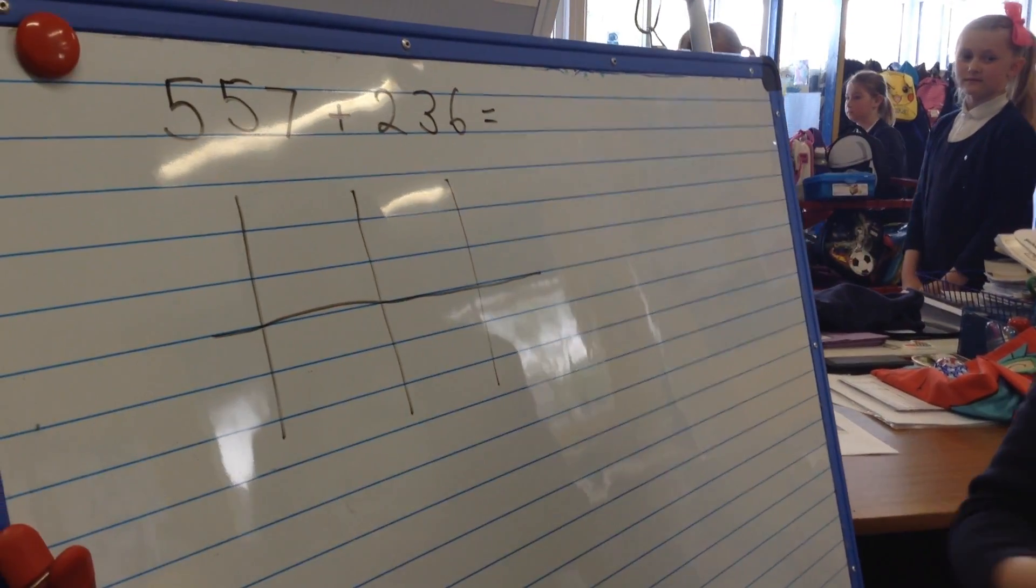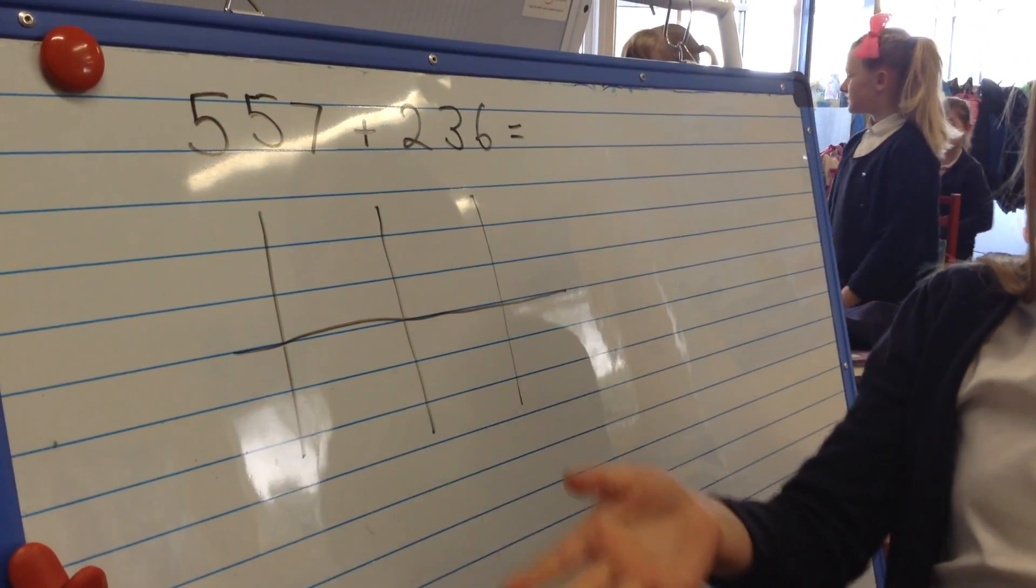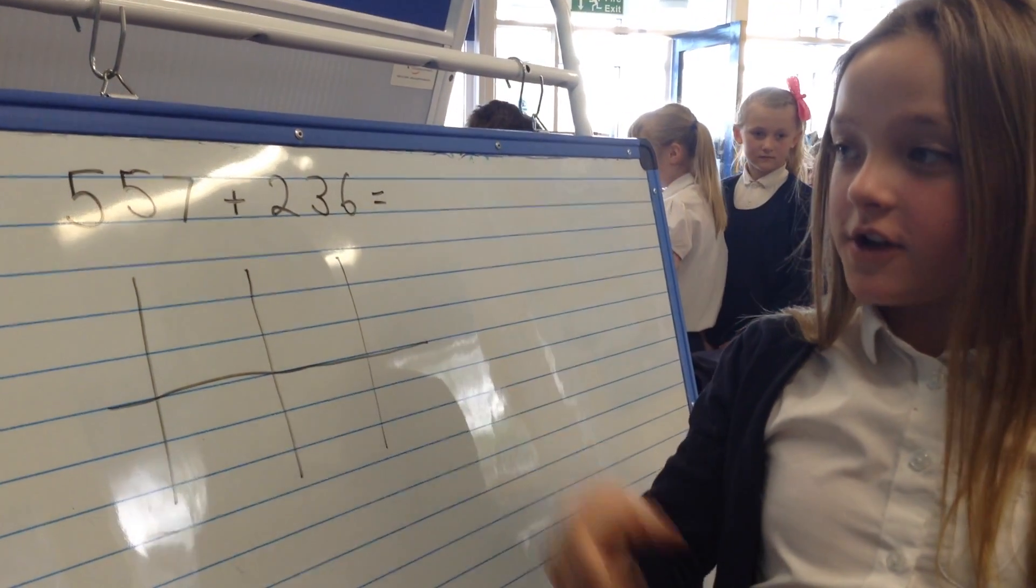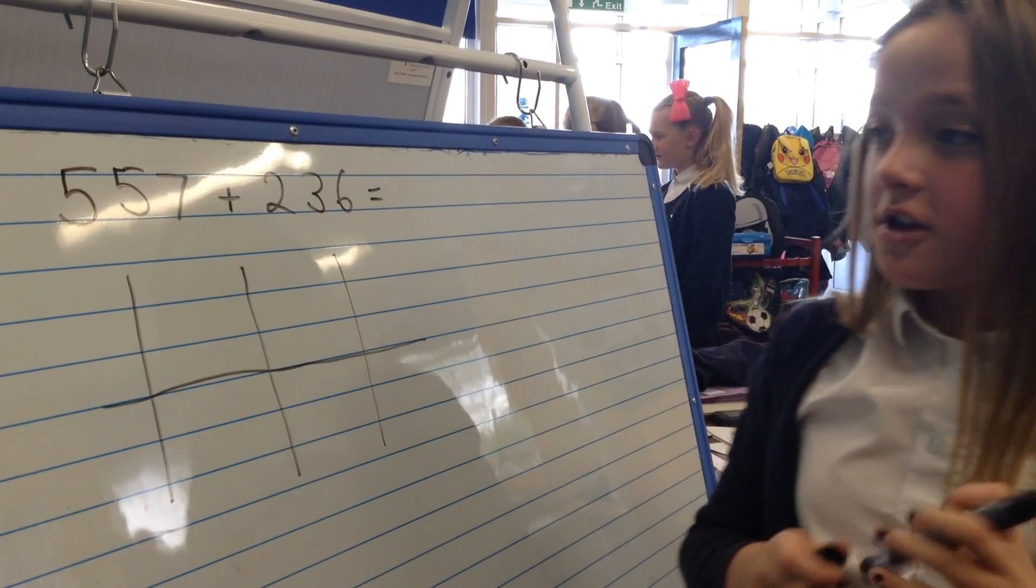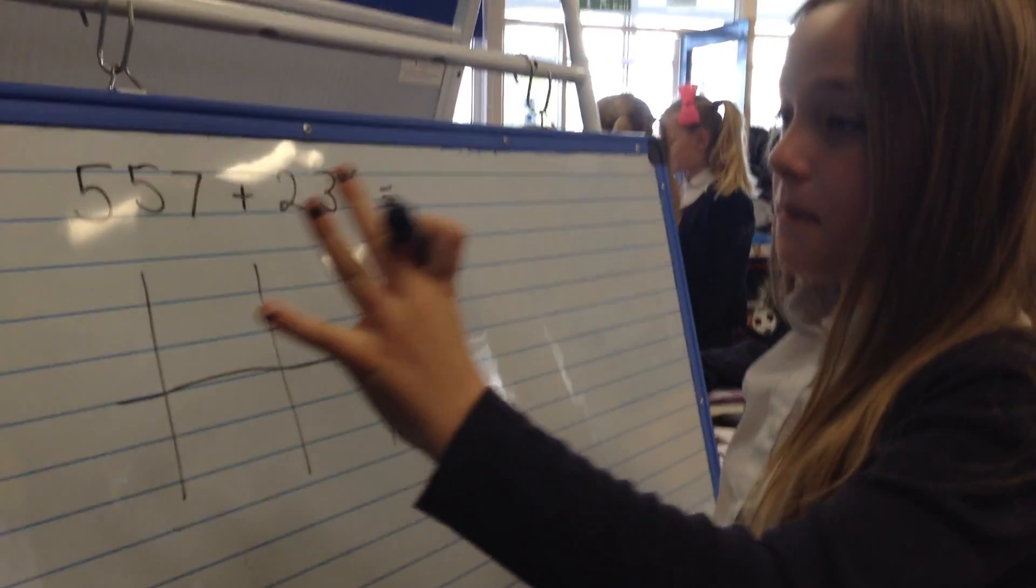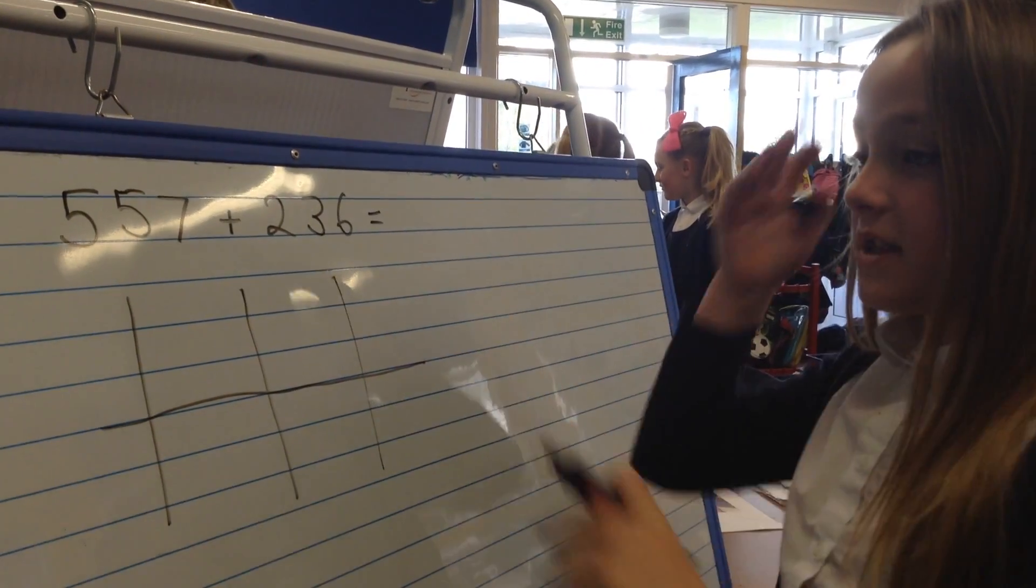So this is how you do expanded column addition. The sum is 557 plus 236. So you'd have to write, you'd have to partition both of them numbers.